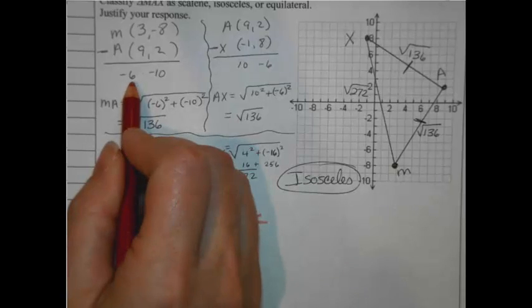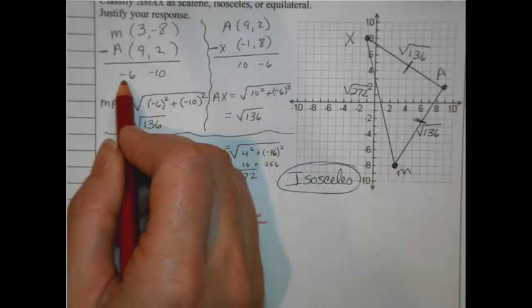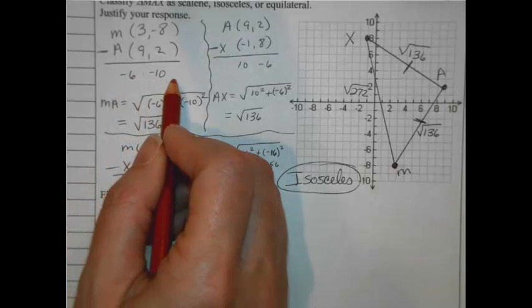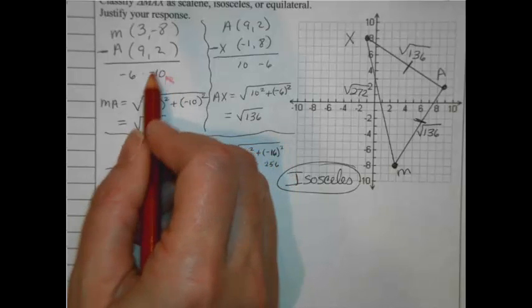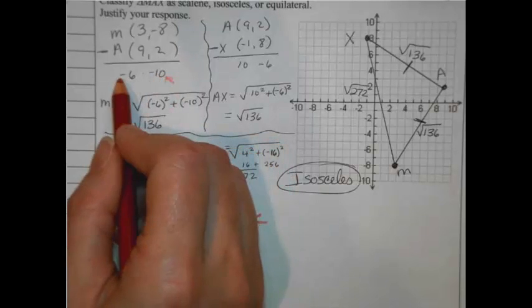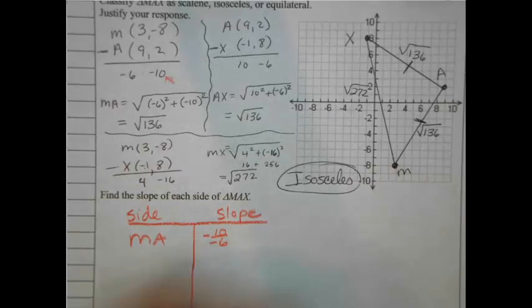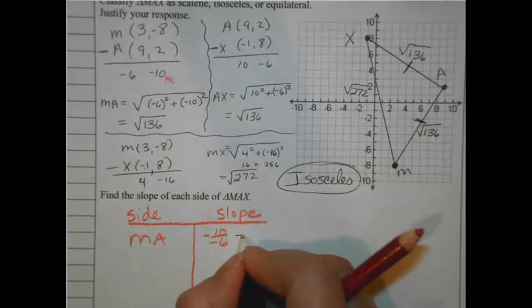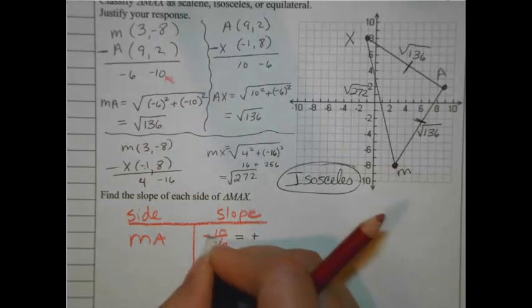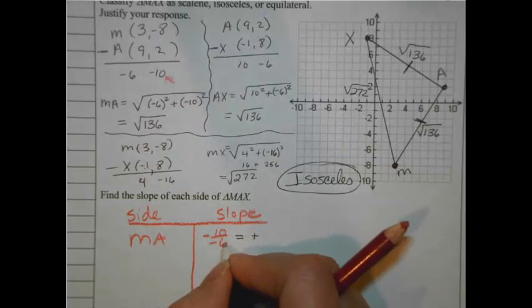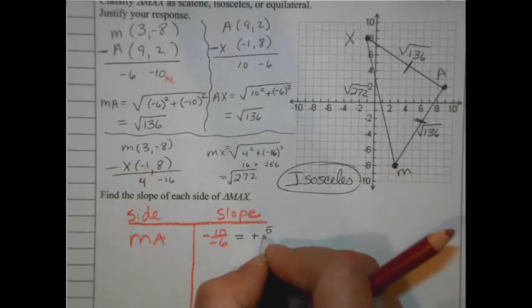I look back to where I did M and A. And remember, one of these numbers is a rise and one of them is a run. The rise is from the Y's. So I'm going to just make a slope number out of this. It's -10 over -6. -10 goes over -6. What does that become? If I simplify that, that becomes a positive. And 10 over 6, I can divide both of those by 2. Let me do that so it's positive 5 over 3.